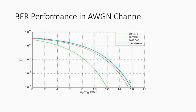This curve gives the BER performance of different modulation techniques in AWGN channel. The green curve and the blue curve coincide and represent the performance of BPSK and QPSK respectively. The red curve represents the performance of 8PSK and 16QAM is represented by sky blue color. BPSK and QPSK require the least Eb/N0, followed by 8PSK and 16QAM. Since the performance of BPSK and QPSK is almost the same, QPSK is preferred over BPSK as it is more bandwidth efficient.